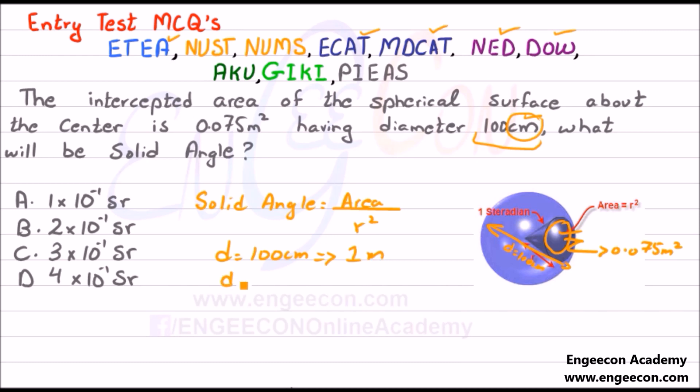As we know that diameter is equal to 2 radius, we can write radius is equal to diameter divided by 2. Here diameter is equal to 1 meter divided by 2 which is equal to 0.5 meter.